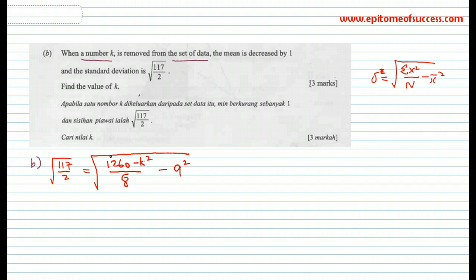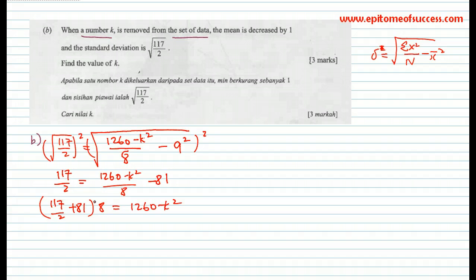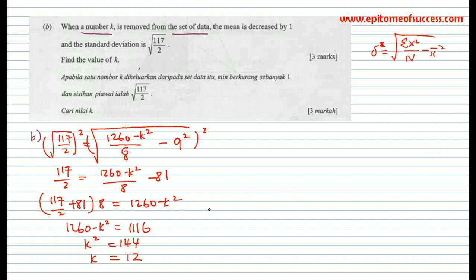Now, the moment you can form this equation, you are pretty safe. You should be able to solve this accurately and get the value K. K is removed, so sum of the squares of data minus K² over 8, that leaves 8 numbers, minus 9 squared. Let's solve this. You can square both sides to get rid of the square root. That leaves you with 117/2 equals to 1260 minus K² over 8 minus 81. Shift everything over, multiply it with 8. That will leave you with 117/2 plus 81 times 8, and you get 1260 minus K². So 1260 minus K² is equal to 1116, and K² would equal to 144, and K would equal to 12. This is how you get the value of K. That's 3 marks.